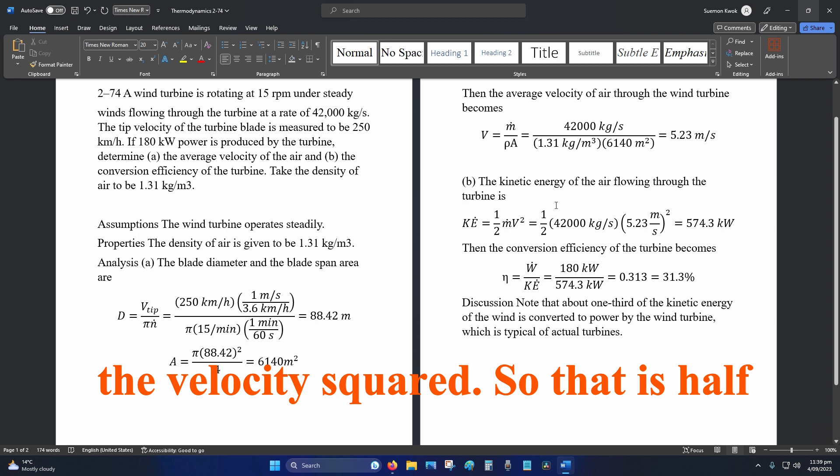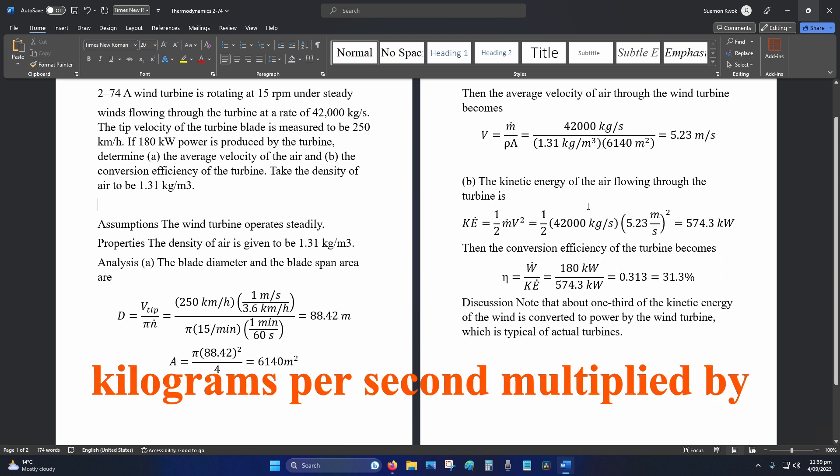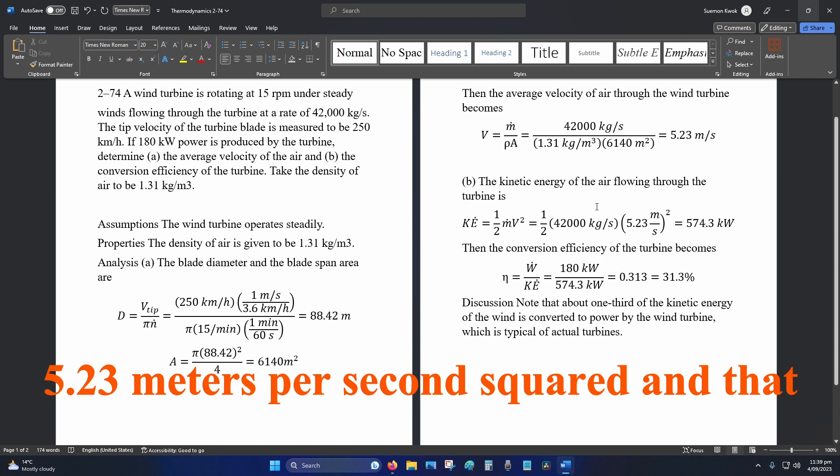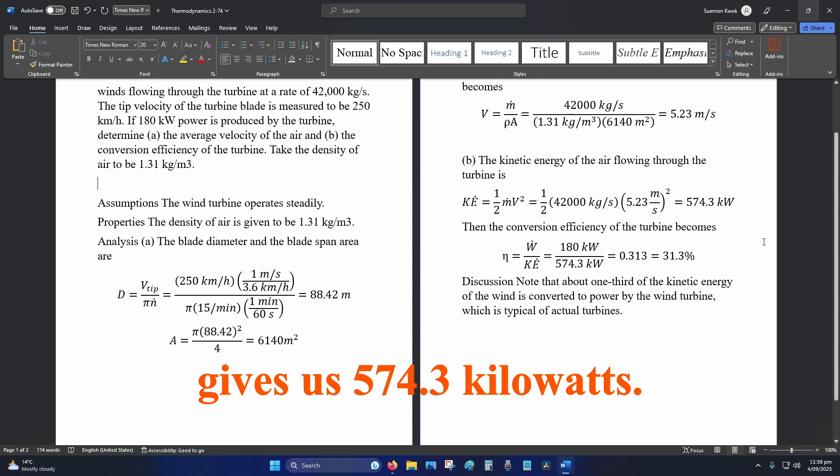So that's half times 42,000 kilograms per second times 5.23 meters per second squared, which gives us 574.3 kilowatts.